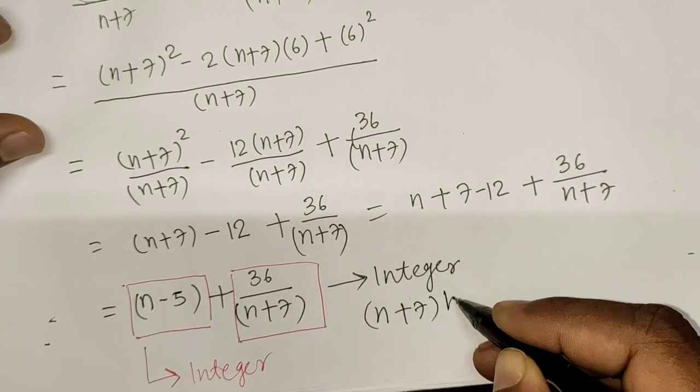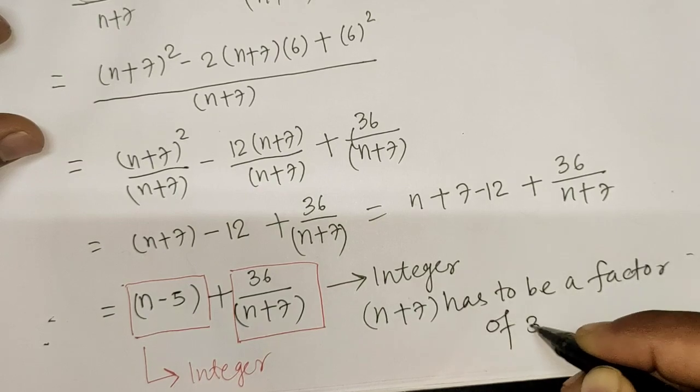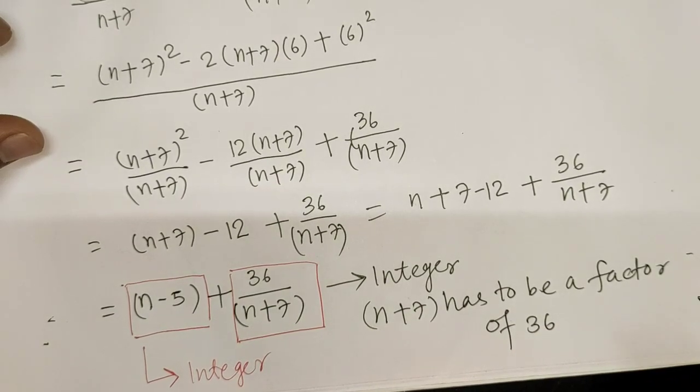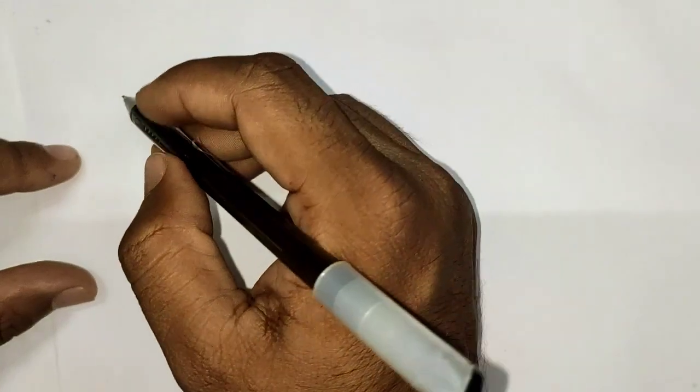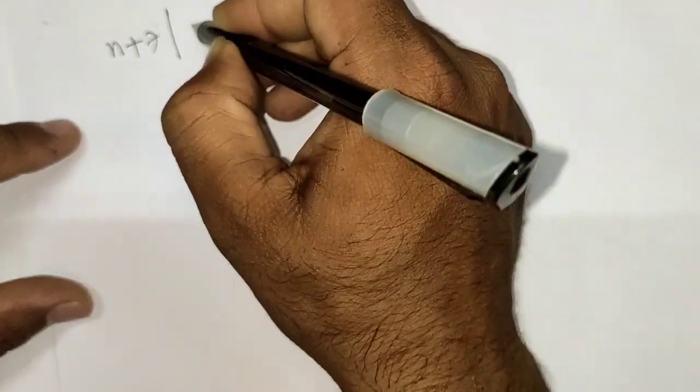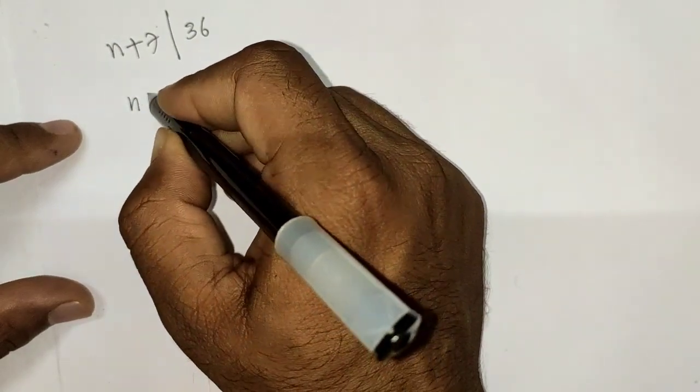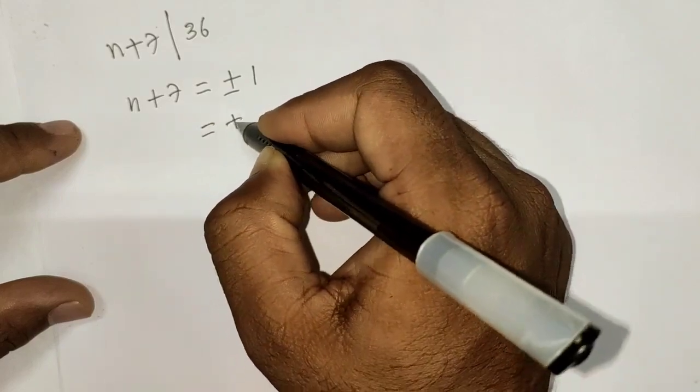This reduces the number of cases for us. So (n+7) divides 36, it means (n+7) can be ±1, ±2, ±3, ±4, ±6, ±12, ±18, ±36.